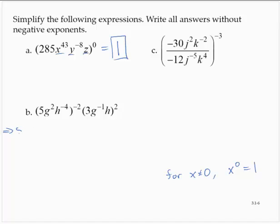I would have 5 to the negative 2nd. I would have g to the 2nd to the negative 2nd. Multiplying exponents, I would have g to the negative 4th. h to the negative 4th to the negative 2nd. That's h to the positive 8th. Then I would have 3 to the 2nd. I would have g to the negative 2nd power and h to the positive 2nd power.